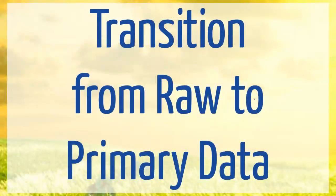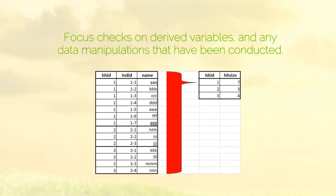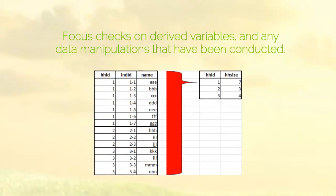At this stage you should focus your checks on any derived variables. These are new variables you create based on the raw data, such as calculating the yield in tonnes per hectare from the original yield data and plot size, and any data manipulations that have been conducted.